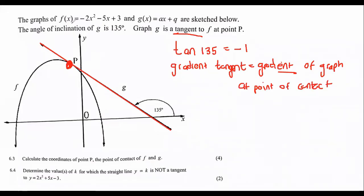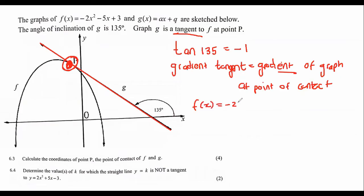This means that the gradient of this parabola is also going to be minus one at the point of contact. So how do we find the gradient of a parabola? We use calculus and take the first derivative. Let me write out the original equation of the parabola, then take the first derivative. We know that the gradient at this point is equal to minus one, so I set that equal to minus one.